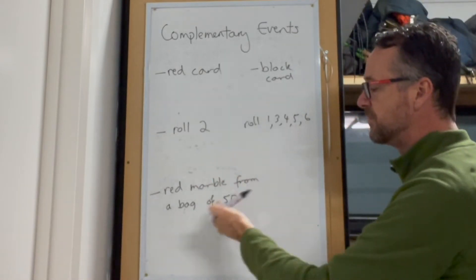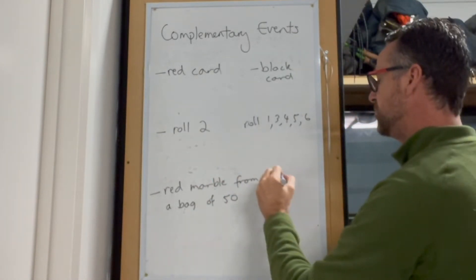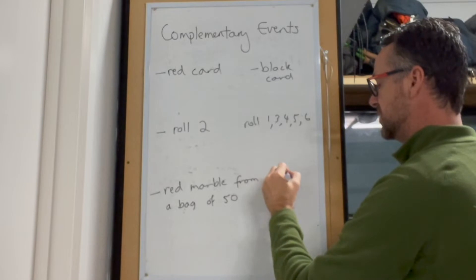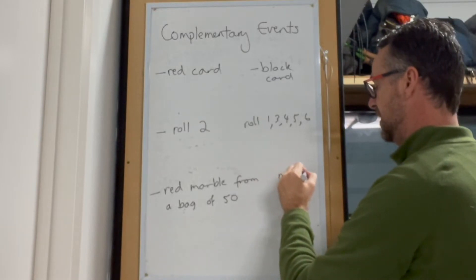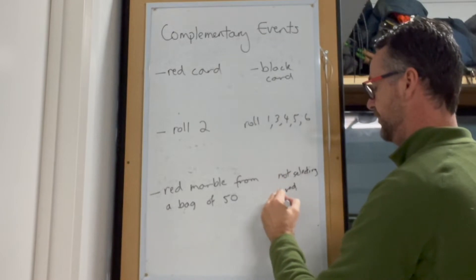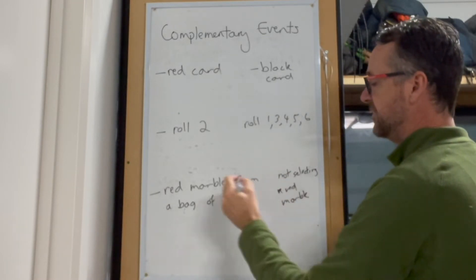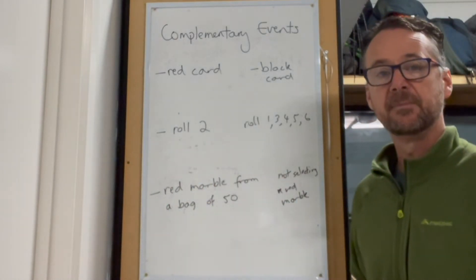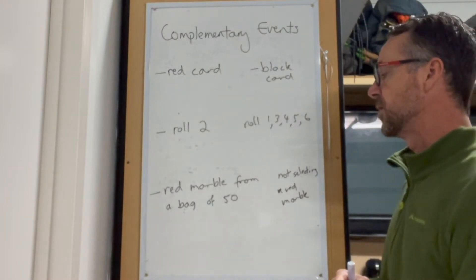And if we want to select a red marble from a bag of 50, it would be not selecting a red marble, because we're not given enough information about the marbles in the bag in order to know what the other options are.